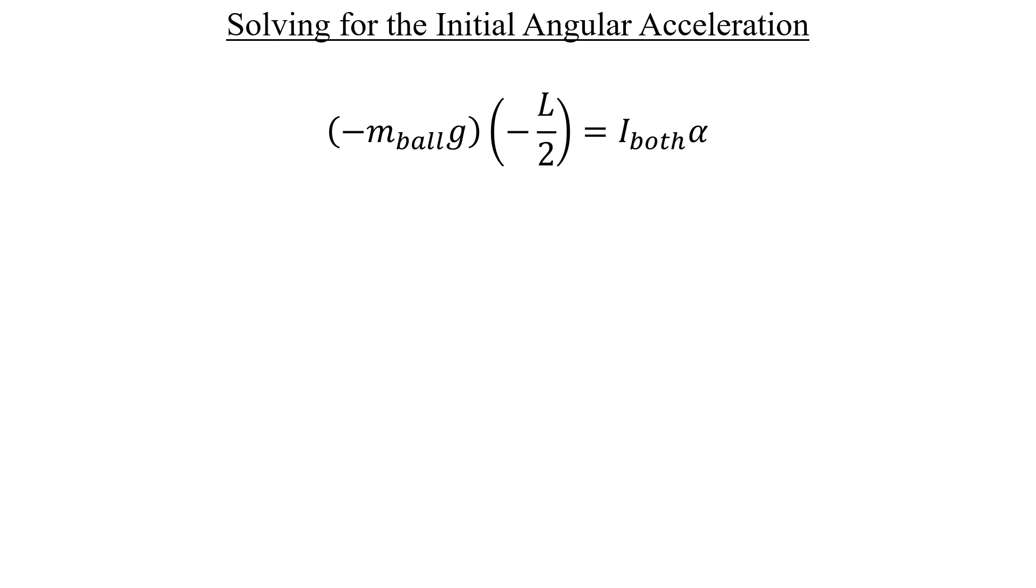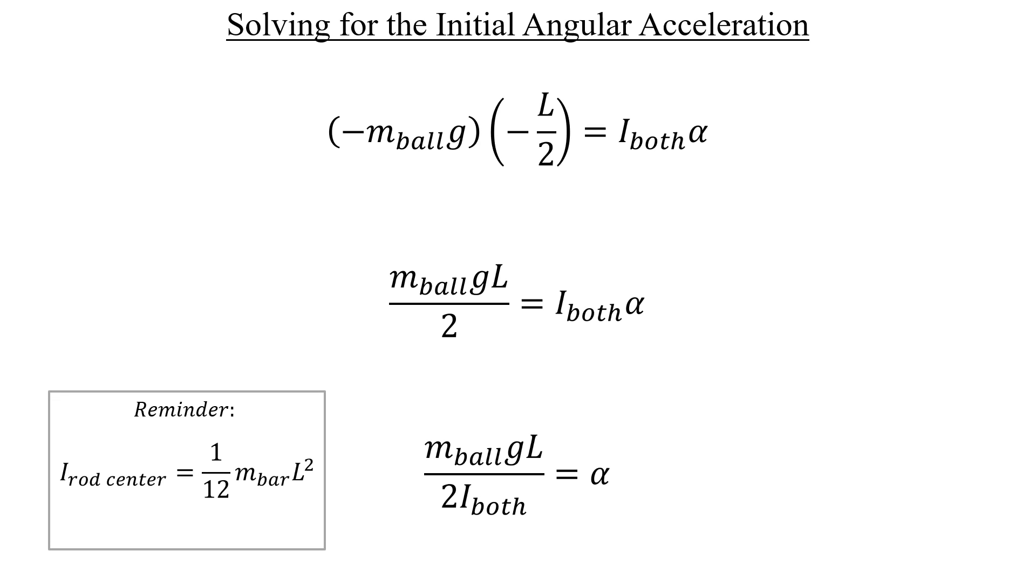Here we can see that the negative signs will end up canceling each other out, which results in a torque that's positive. To isolate the angular acceleration, let's divide both sides by the moment of inertia of both objects, and then try to figure out what kind of expressions we should put down there. The problem is that we don't exactly know what the moment of inertia is for rotation through the center of a bar. But we do have an expression that's pretty close if we end up approximating the bar as a rod instead.